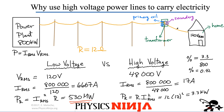It's better to keep the current as low as possible, because the energy dissipated scales as I squared. Although we found that we have less power loss using high voltage, once it gets to the home we only want 120 volts. So we're going to need a transformer in order to step down the voltage.